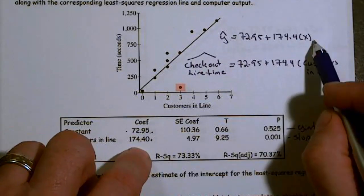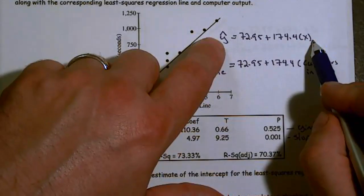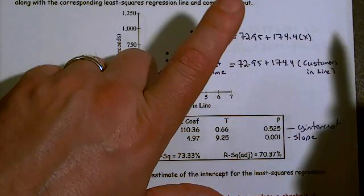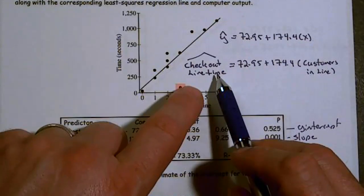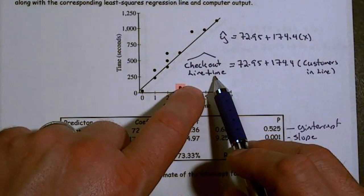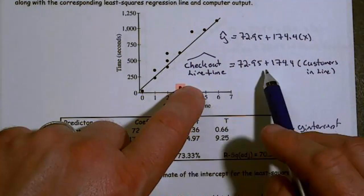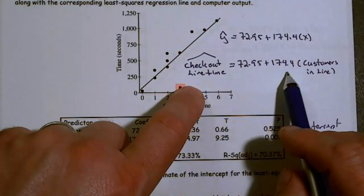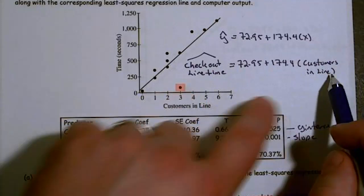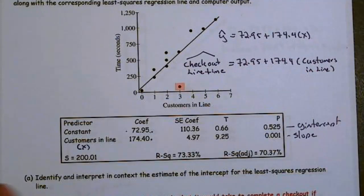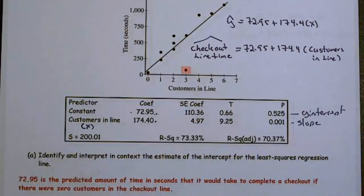Y-hat equals 72.95 plus 174.4x. If you write it like that, you must define your y and x. However, you write it like this, where checkout time equals 72.95 plus 174.4 times the number of customers in line for your x, then you've defined your variables and you're good to go.